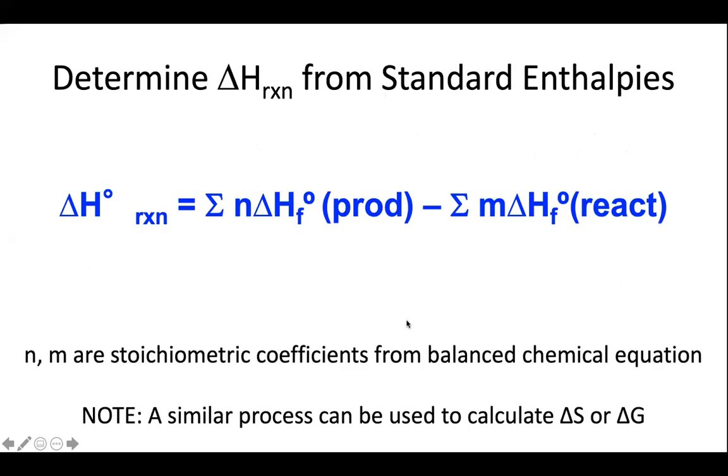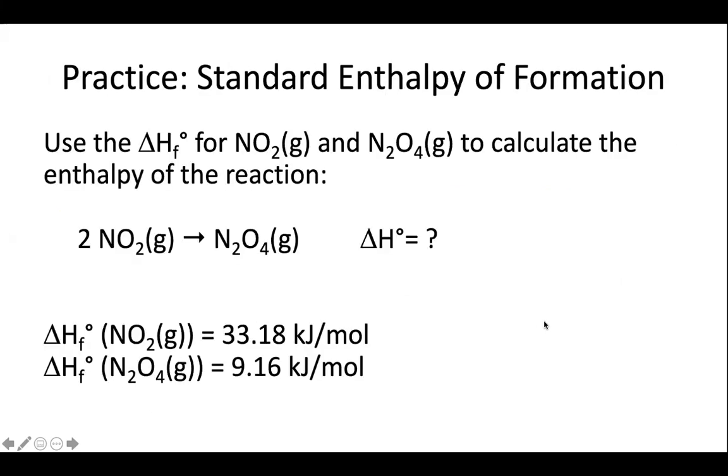So this rule of products minus reactants is really just an application of Hess's law, and Hess's law is a more general rule that we could use for any type of equation, even if it weren't a standard enthalpy of formation. So again, writing this out, we would have the products minus the reactants. We have some other things here. This is the sum of all of the products multiplied by their coefficients. This is the sum of all of the reactants multiplied by their coefficients. We can use this same process if we're calculating a standard entropy or a standard free energy, where we do products minus reactants, and all of those things, delta H naught, delta S naught, and delta G naught are available in those tables at the end of the textbook.